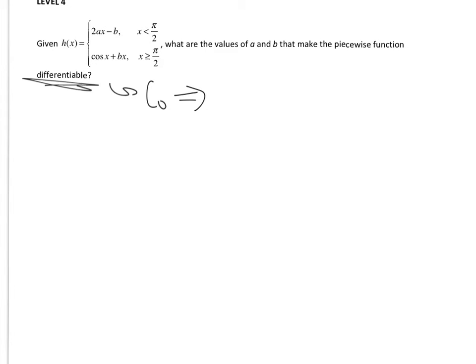In order for these to be continuous, the limit as I approach from the left has to be equal to the limit I approach from the right. From the left of pi over 2, I get 2 times a times pi over 2.